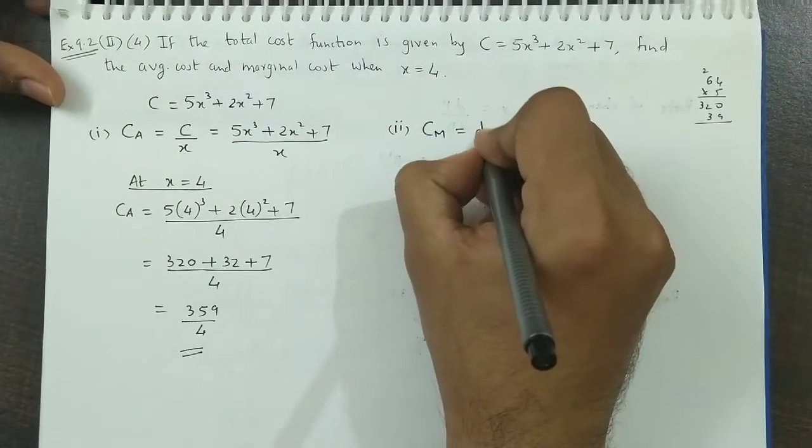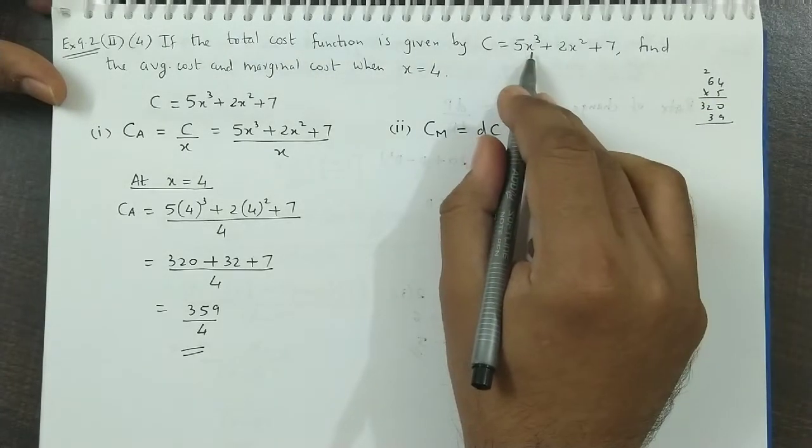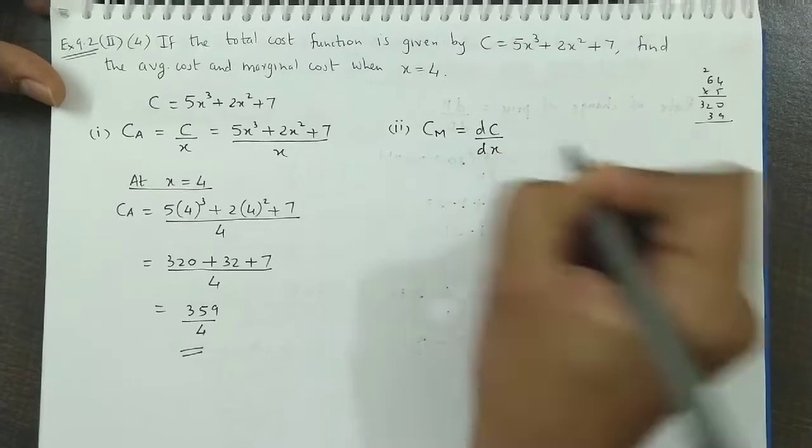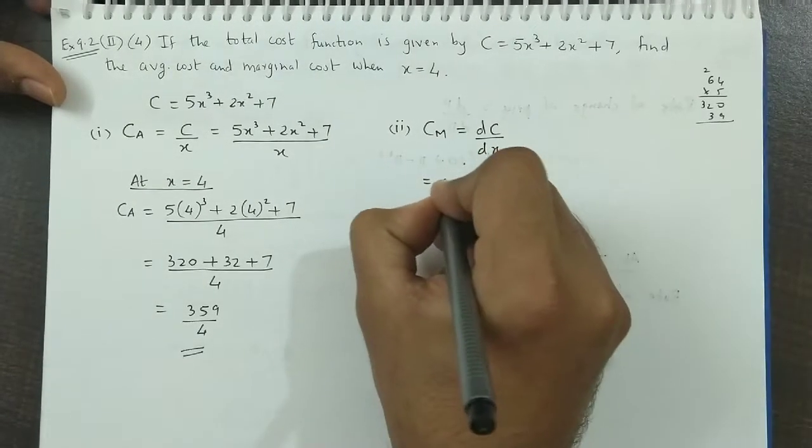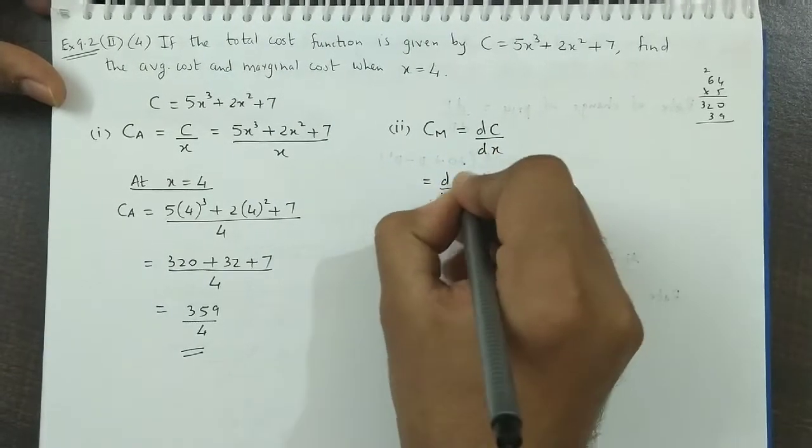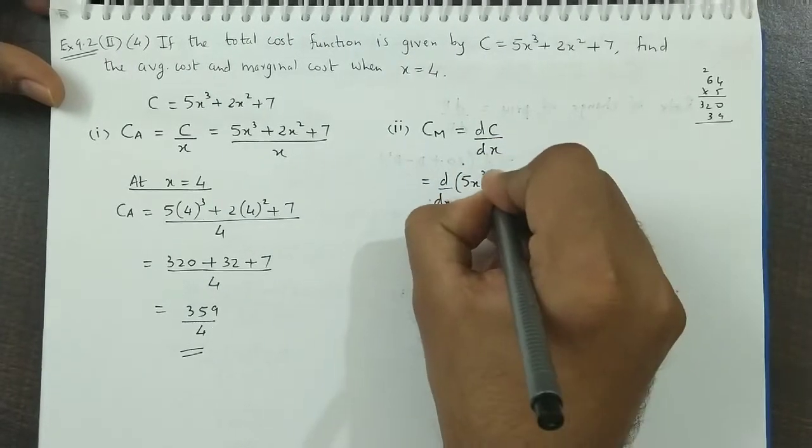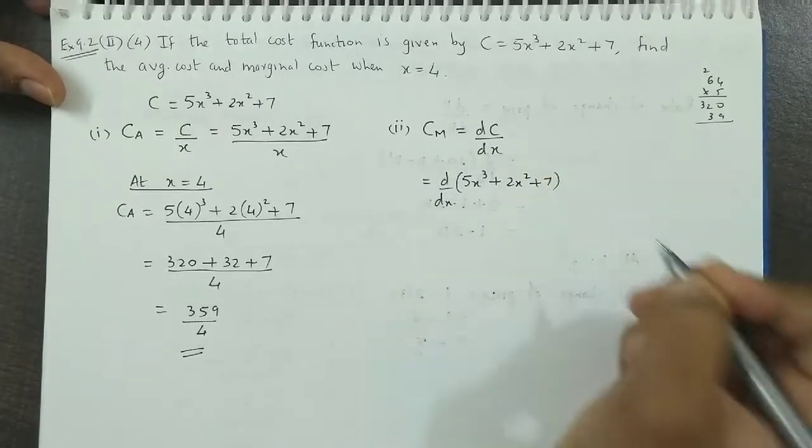So marginal cost is derivative of cost. And cost is expressed in x. So we take derivative of cost with respect to x. So that is derivative of, now cost function is 5x³ + 2x² + 7.